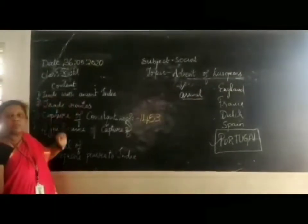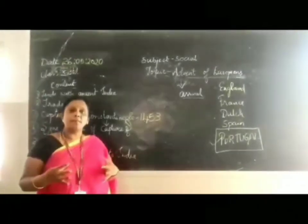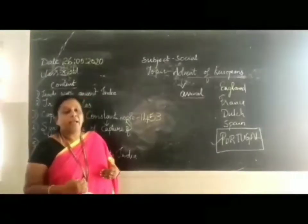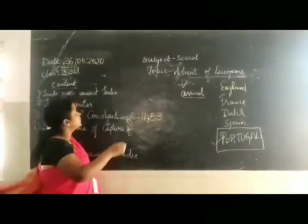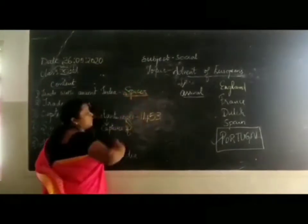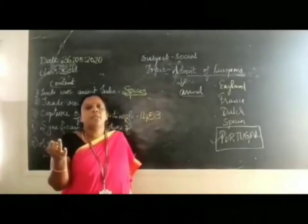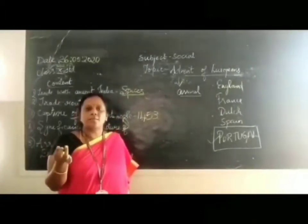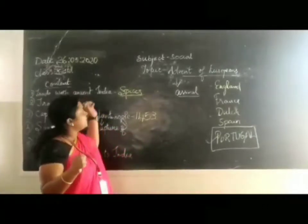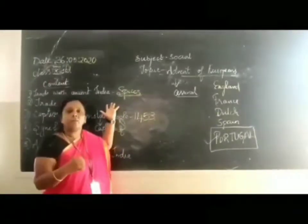Trade in ancient India: India is not a country unknown to the world. It has been known from ancient times. India had trade with many countries like China, Egypt, and others. India was very famous in the world for spices — things like cinnamon, cardamom, cloves, pepper. These spices were ingredients used in the preparation of food, and they were in great demand in the European countries.